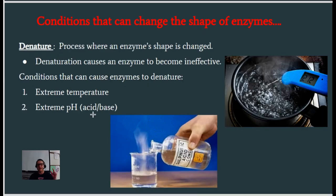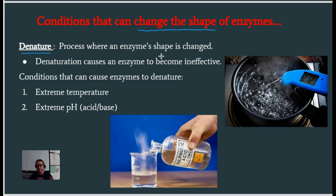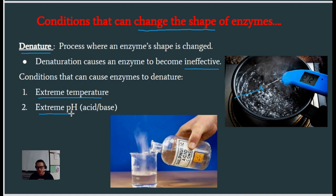The shape of an enzyme is very important because the active site has the perfect shape for the substrate to fit into. What can change that shape? The process of changing an enzyme's shape is called denature. Denaturation causes an enzyme to become ineffective — it doesn't work as well or at all. Two things that can change the shape of an enzyme: number one, extreme temperature — most enzymes do not like extreme high temperatures. Number two, extreme pH, which is a measure of how acidic or how alkaline a solution is.